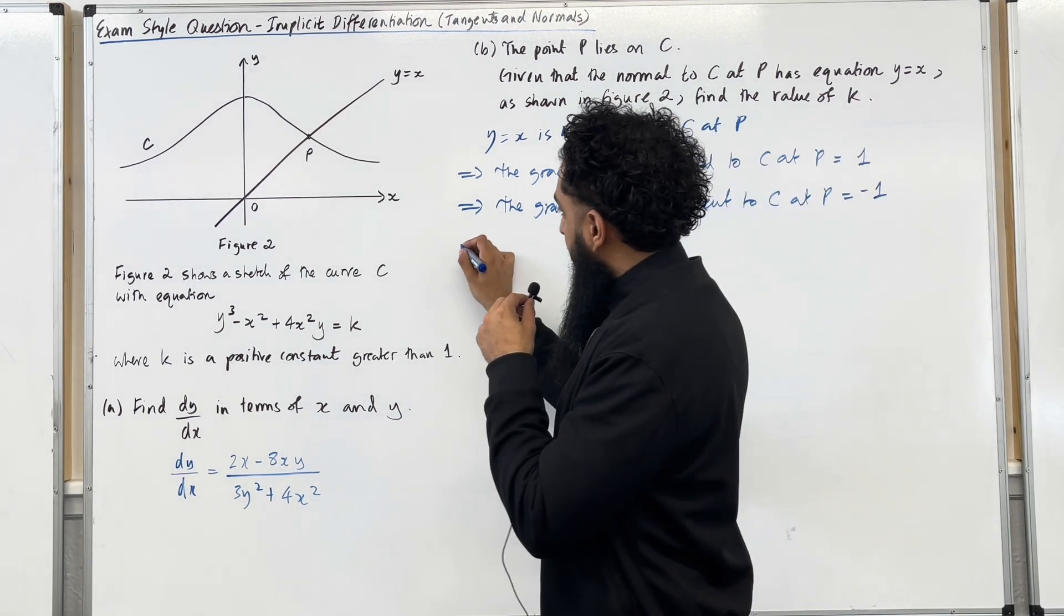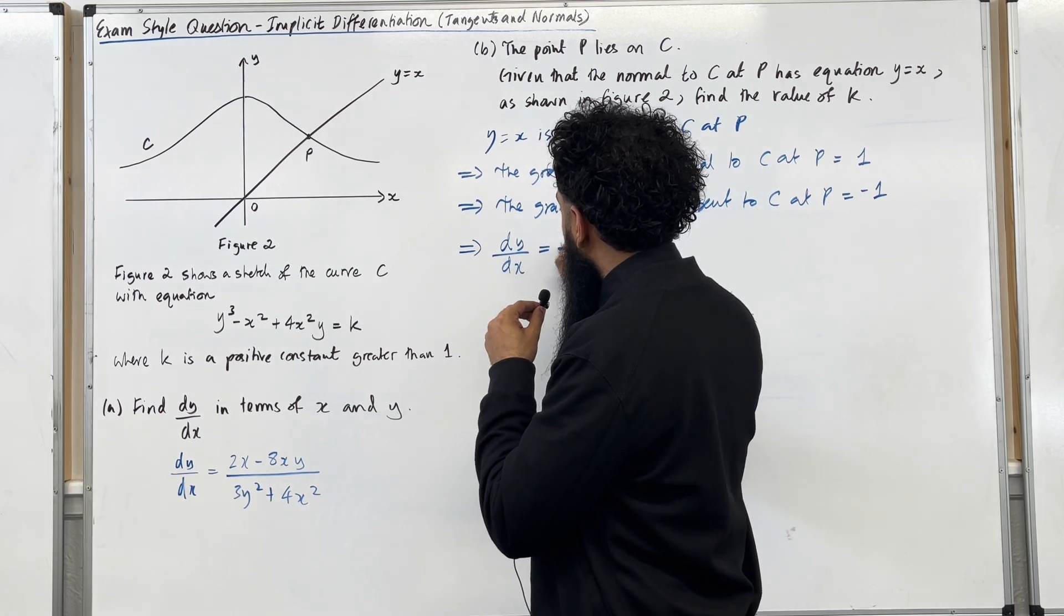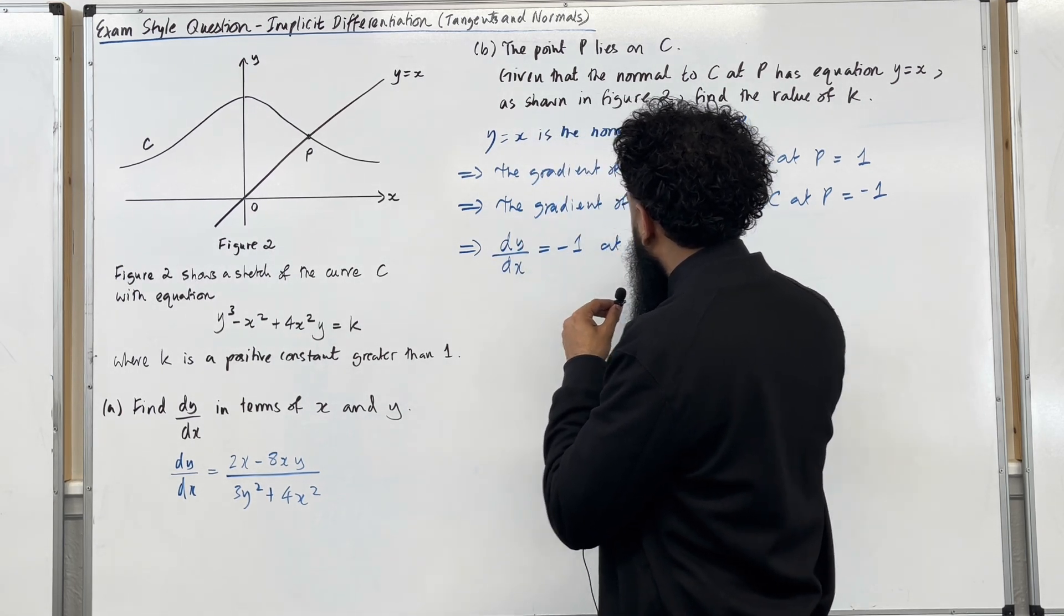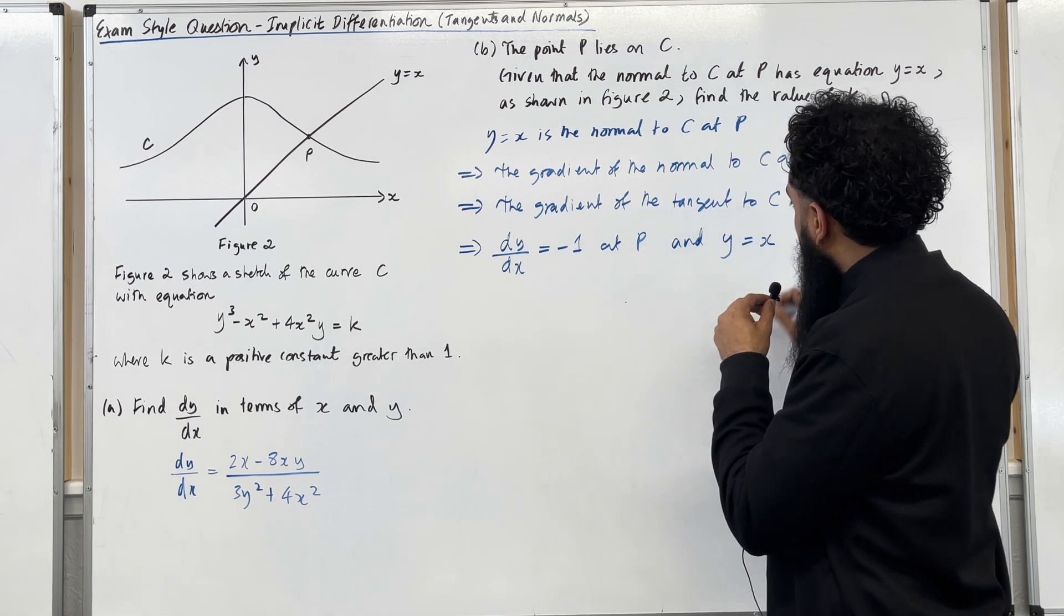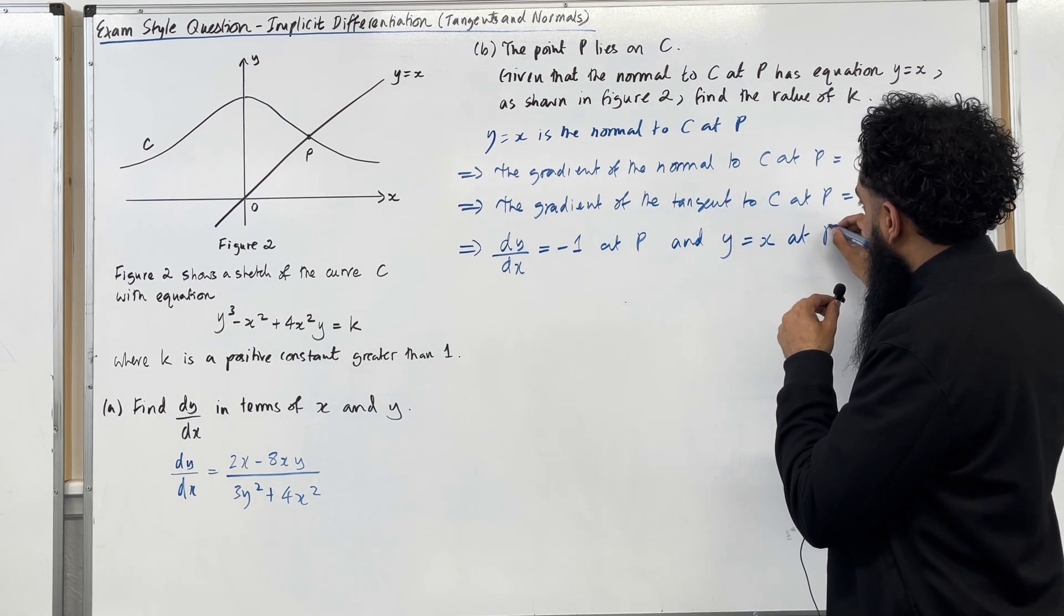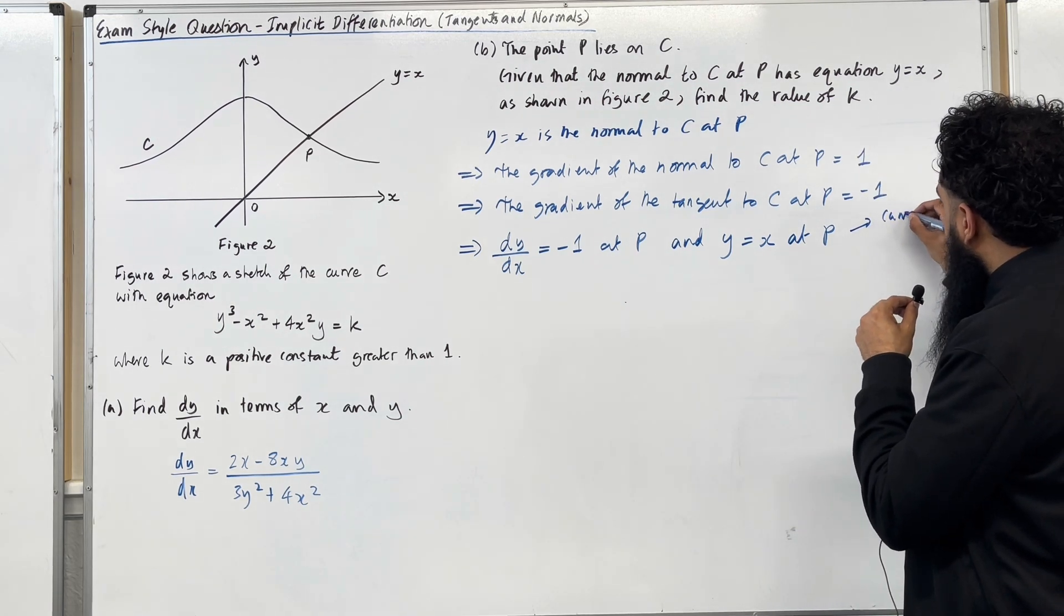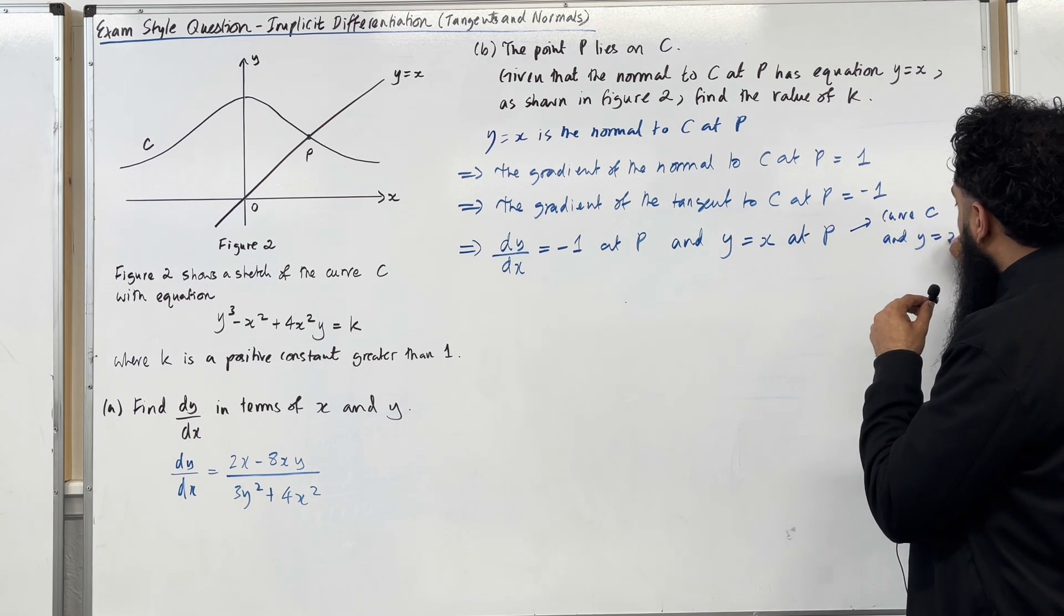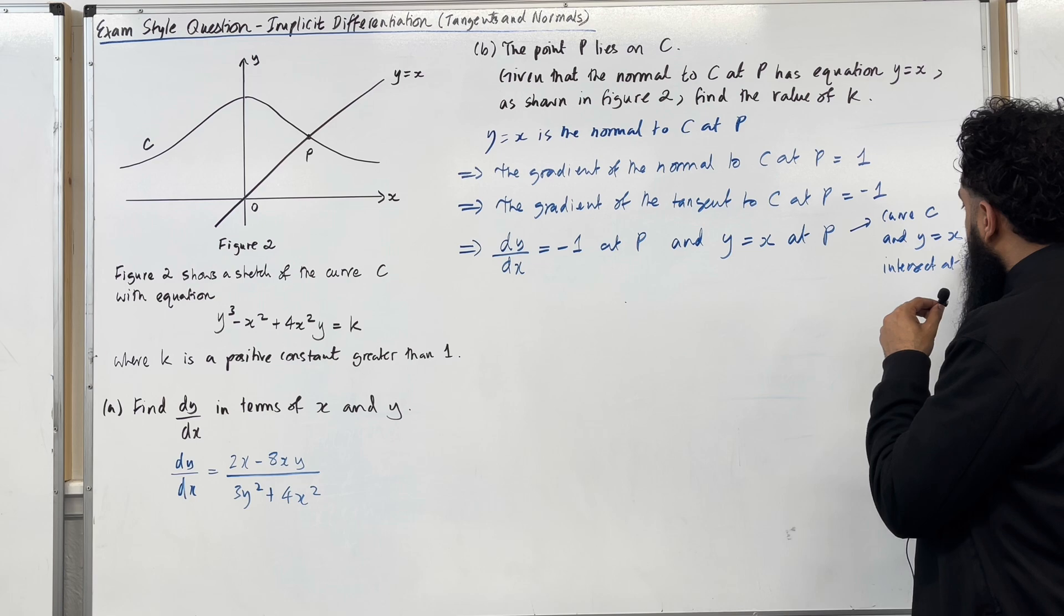The coefficient of x is 1. This in turn implies that the gradient of the tangent to C at P has to be the negative reciprocal of 1, which is minus 1. This implies that dy over dx is equal to minus 1 at P. And we know that y is equal to x at P. This is because curve C and y equal x intersect at P.